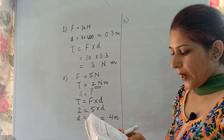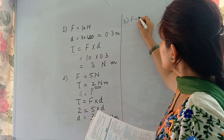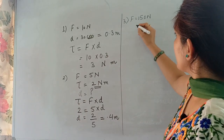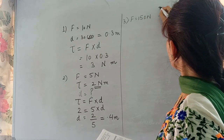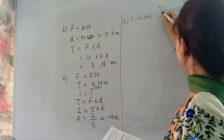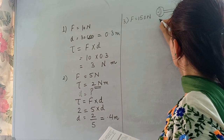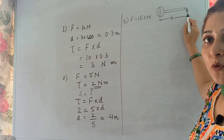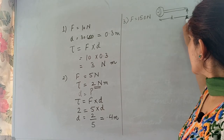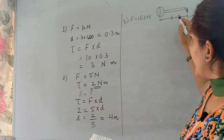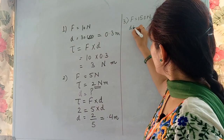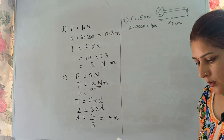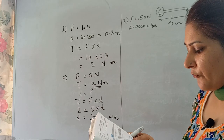The third example: a mechanic can open a nut by applying a force of 150 newtons while using a lever handle of length 40 centimeters. The mechanic applies the 150 newton force at 40 centimeters from the nut. Convert 40 centimeters to meters: 0.4 meters.